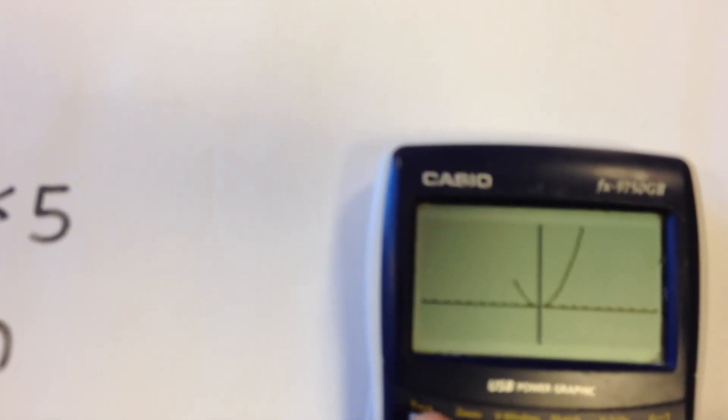So what I'm going to do is I'm going to do trace, and then I'm going to type in the value 5, and it's going to take me all the way up to 5, and it tells me when x is 5, y is 25.